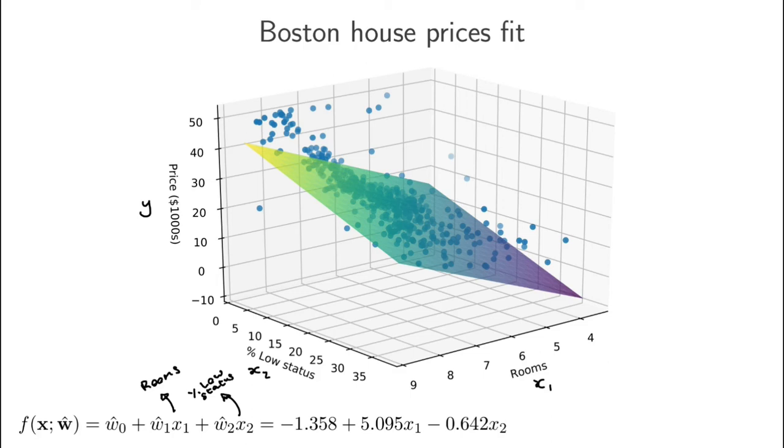Let's say the number of low status households in a neighborhood is 10%. Does the median house price go up or down when I increase the number of rooms according to this model? And where do you see that in the model equation? It's maybe a first question.